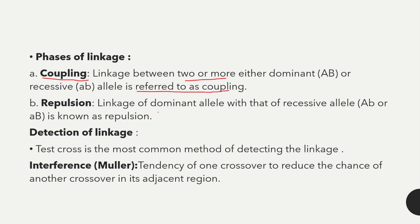The second phase is repulsion — linkage of a dominant allele with a recessive allele. In coupling it is either dominant or recessive alleles together, but in repulsion there is one dominant and one recessive allele. Test cross is the most common method for detecting linkage.